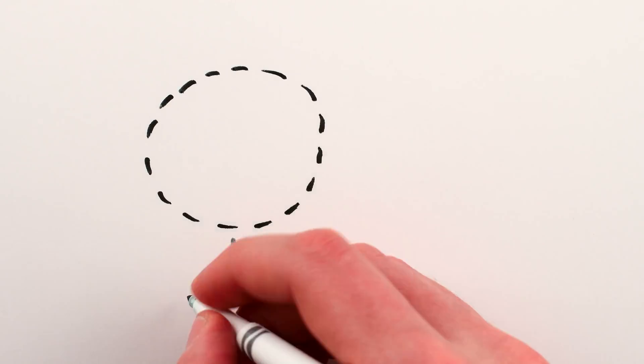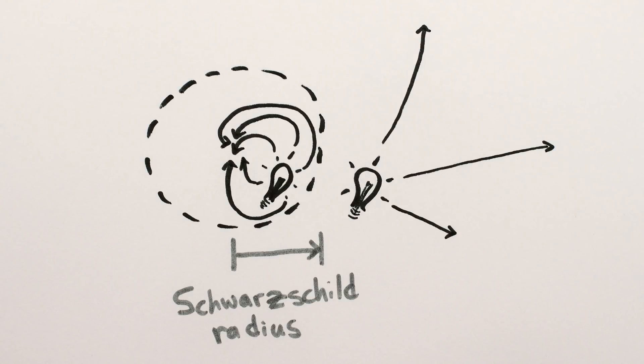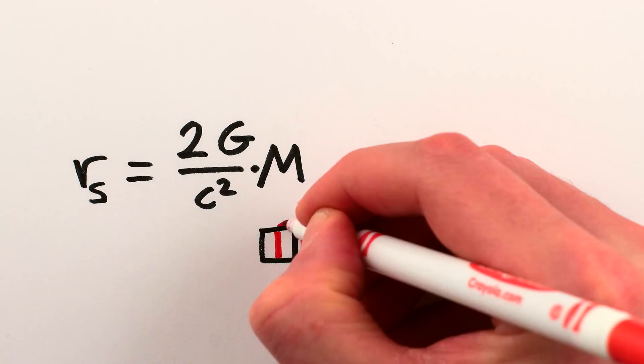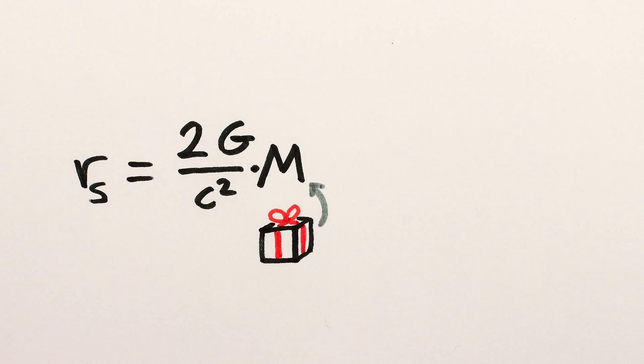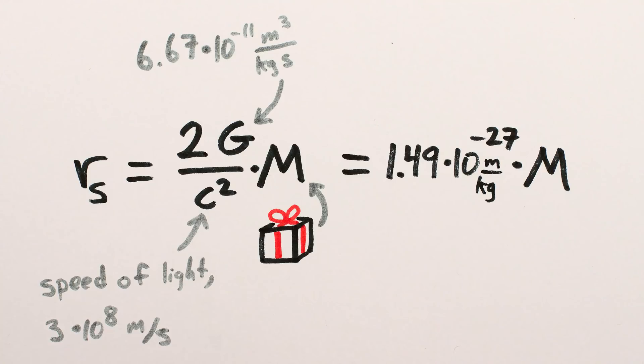The Schwarzschild radius is the distance from the center of a black hole below which nothing, not even light, can escape. You may have heard it called the event horizon, and how big it is depends only on the black hole's mass. The G and c² here are just constants that help convert from kilograms to meters, so the equation can also be written as 1.49 × 10^-27 times mass. But the important thing is that the heavier the black hole, the bigger the Schwarzschild radius.